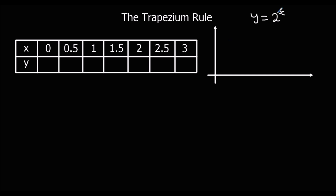So for y = 2^x: 2^0 = 1; 2^0.5 ≈ 1.41 (to 3 s.f.); 2^1 = 2; 2^1.5 ≈ 2.83; 2^2 = 4; 2^2.5 ≈ 5.66 (to 3 s.f.); and 2^3 = 8.